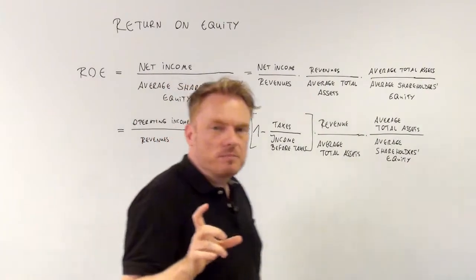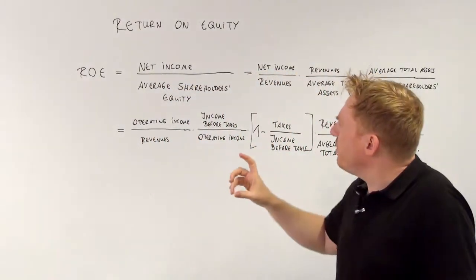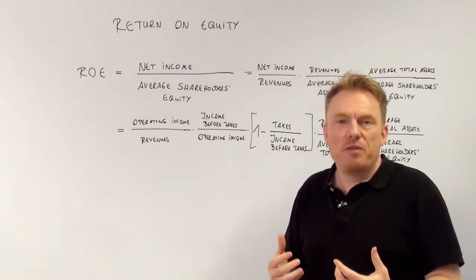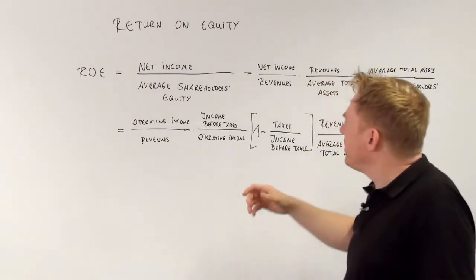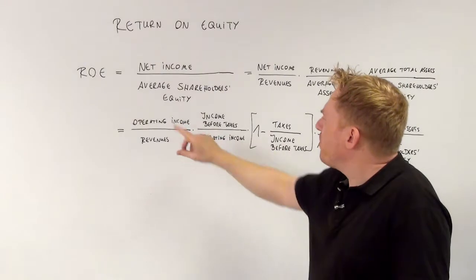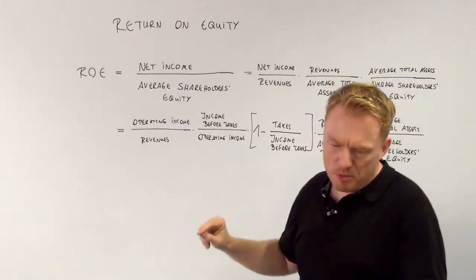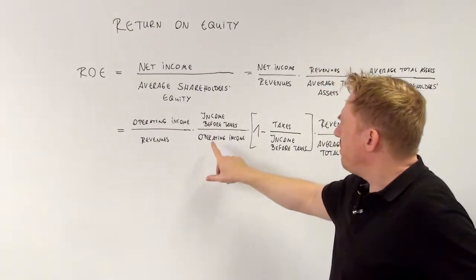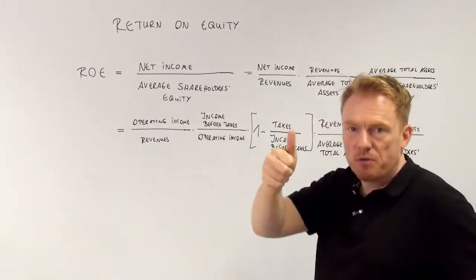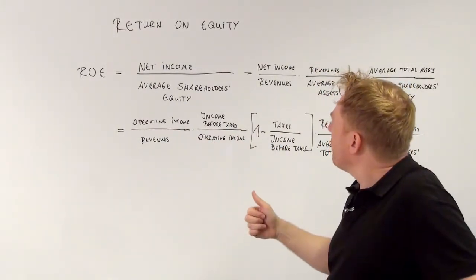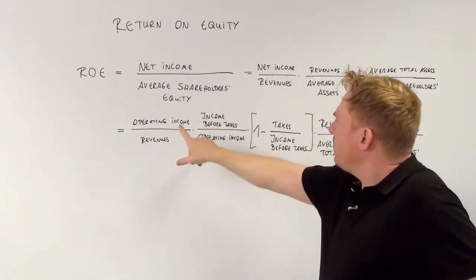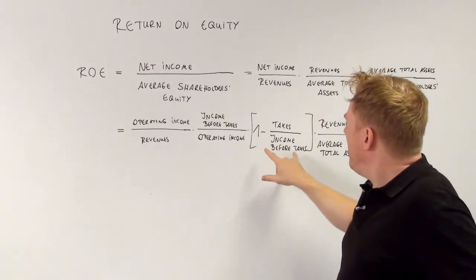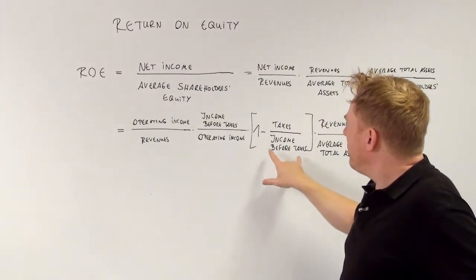Now there's a third way of computing return on equity, and again it's just a question of expanding the right way — for example, expanding with operating income. We have operating income in the numerator and in the denominator. So we start and expand with the operating income.